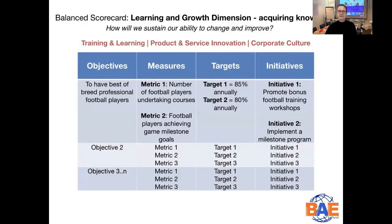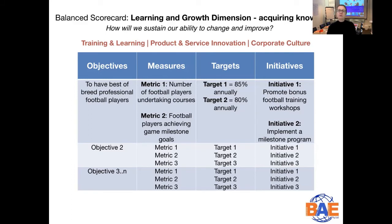Now let's have a look at the specifics. We are taking each of the dimensions one by one and developing objectives, measures, targets, and initiatives. So let's look at the learning and growth dimension and how we can build the objectives for that. Here we ask the key question: how will we sustain our ability to change and improve? Keeping the vision and strategy in mind, we're looking at topics around training and learning, product and service innovation, and corporate culture.